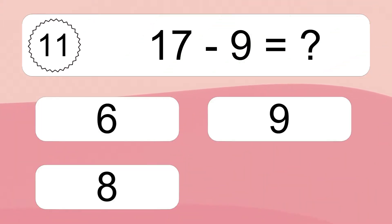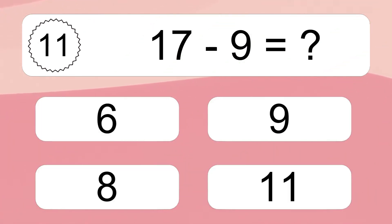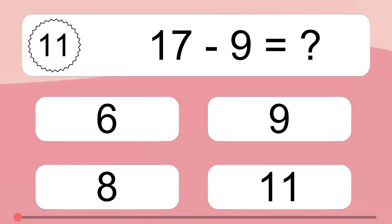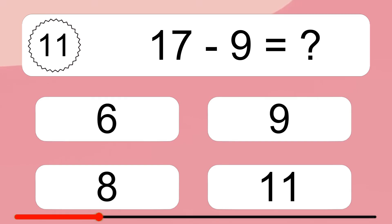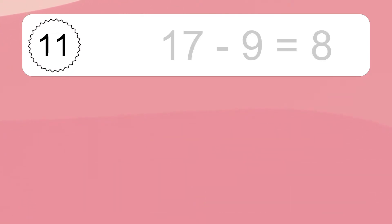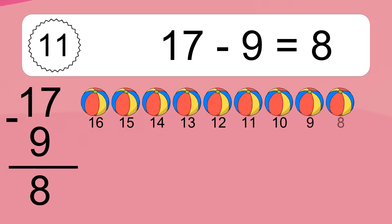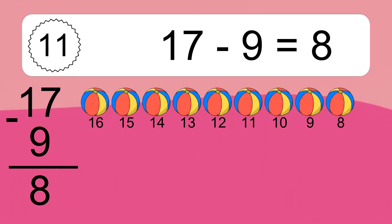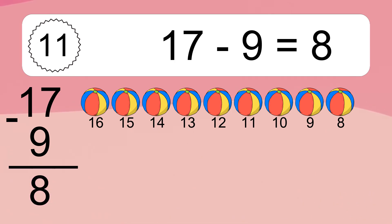17 minus 9 equals what? 17 minus 9 equals 8. Let's count it. 16, 15, 14, 13, 12, 11, 10, 9, 8.